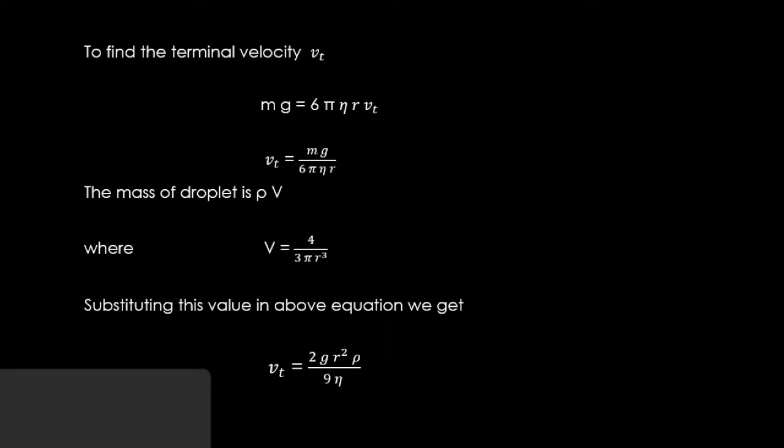The mass of the droplet is ρV, where V is the volume of the droplet. V = (4/3)πr³. Substituting this value in the above equation, we get vₜ = (2gr²ρ)/(9η).